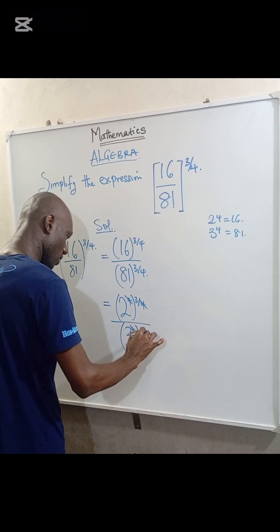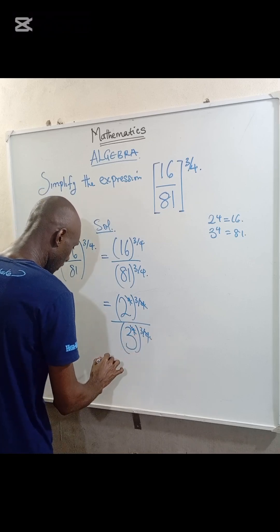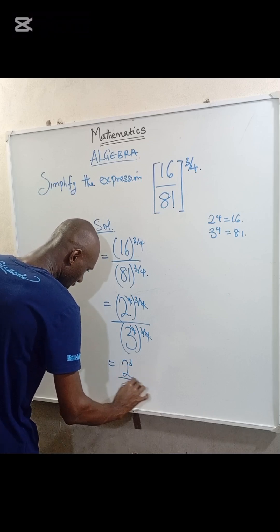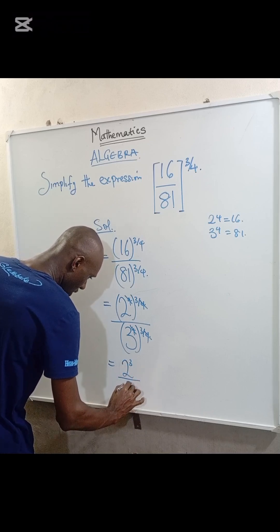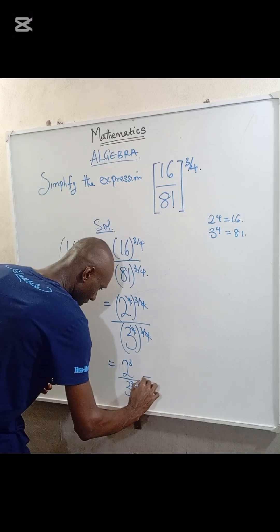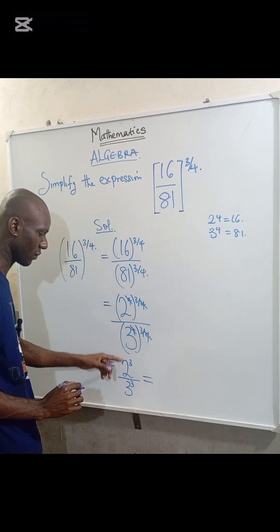So we are left with 2 to the power of 3 divided by 3 to the power of 3. We can express this as 2 to the power of 3 equals 8, and 3 to the power of 3 equals 27.